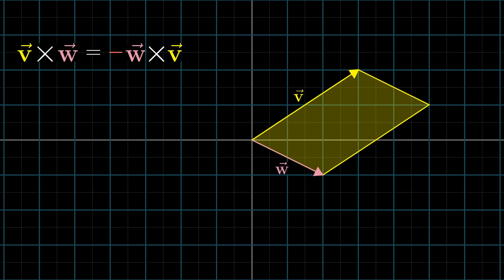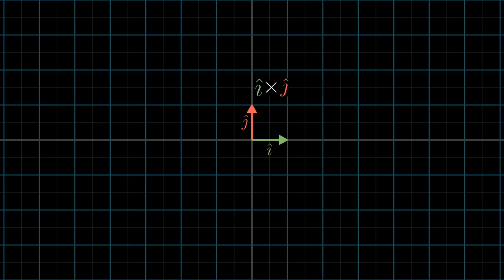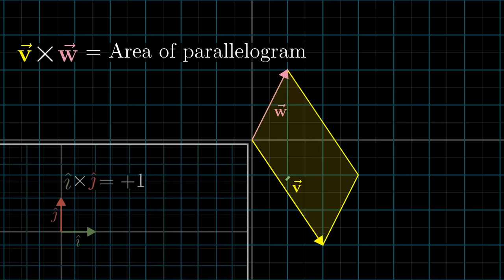The way I always remember the ordering here is that when you take the cross product of the two basis vectors in order, i hat cross j hat, the result should be positive. In fact, the order of your basis vectors is what defines orientation. So since i hat is on the right of j hat, I remember that v cross w has to be positive whenever v is on the right of w.